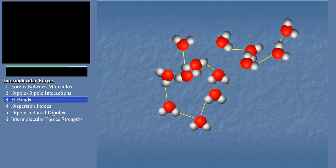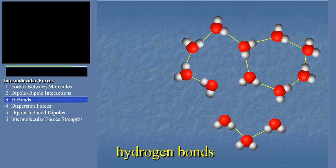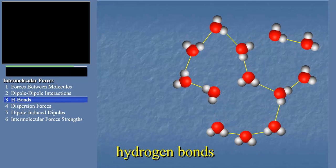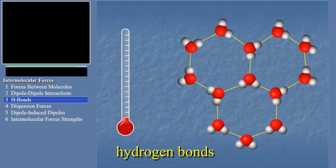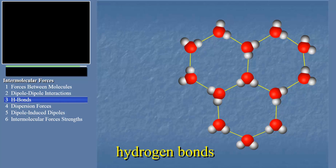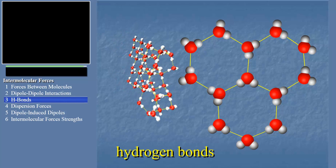We call these partial bonds hydrogen bonds. In the liquid, these hydrogen bonds are forming and breaking constantly. But as the temperature cools, the water molecules get frozen in place by these hydrogen bonds, leaving big gaps and causing the density of ice to be lower than that of the liquid.